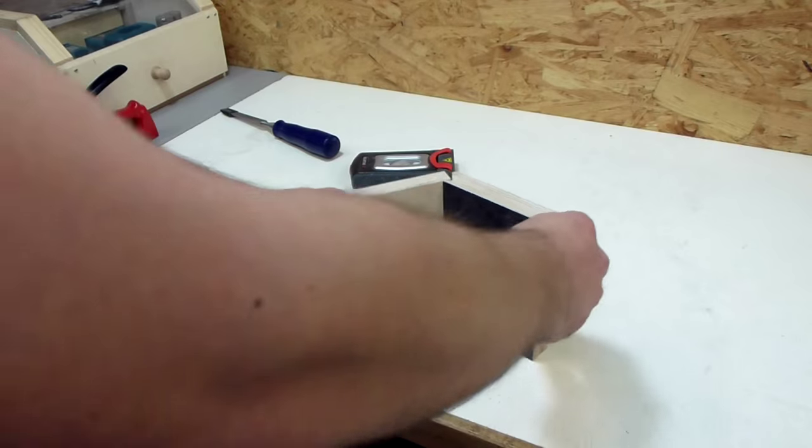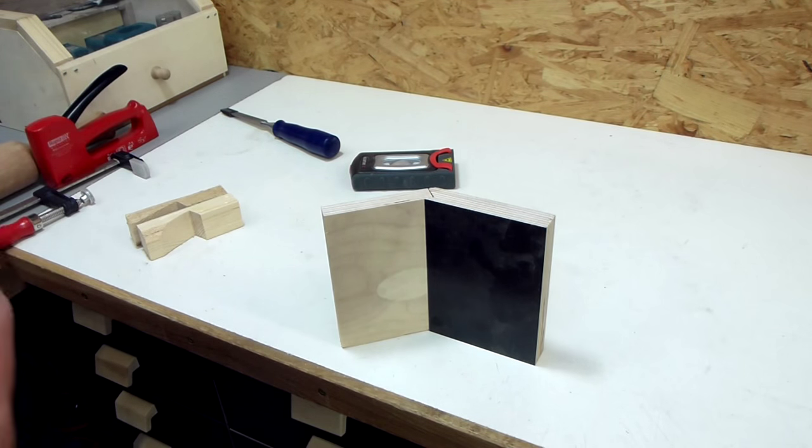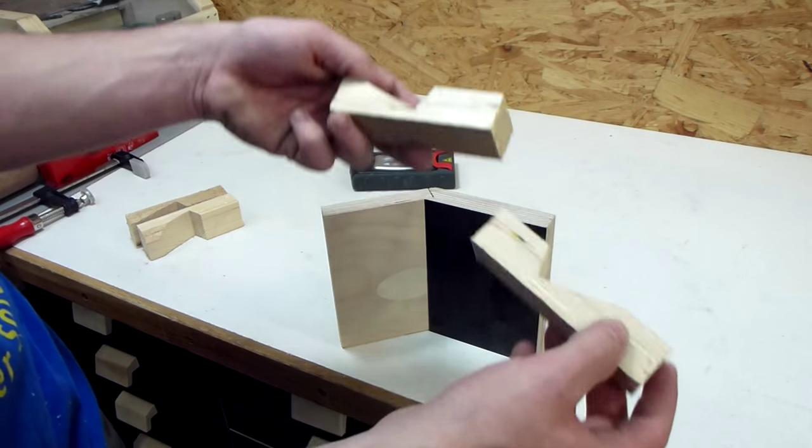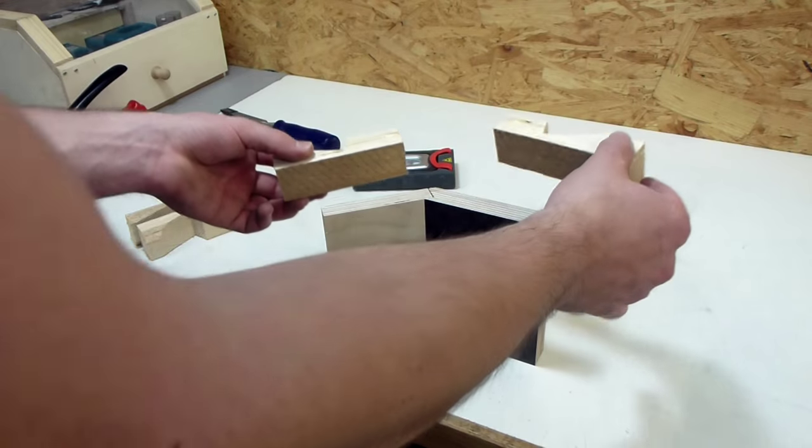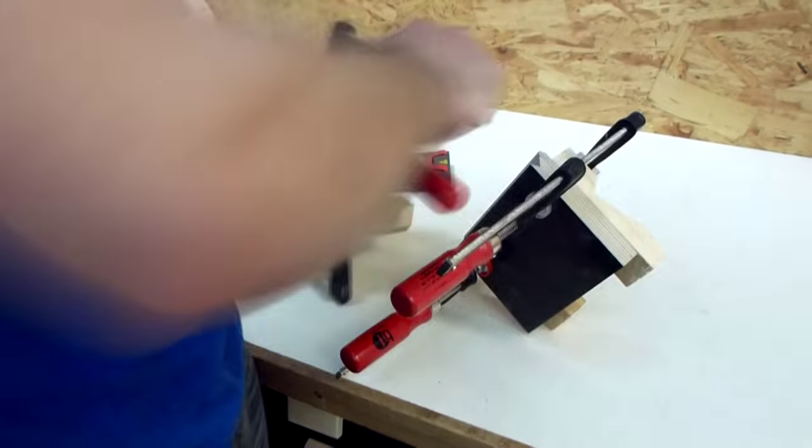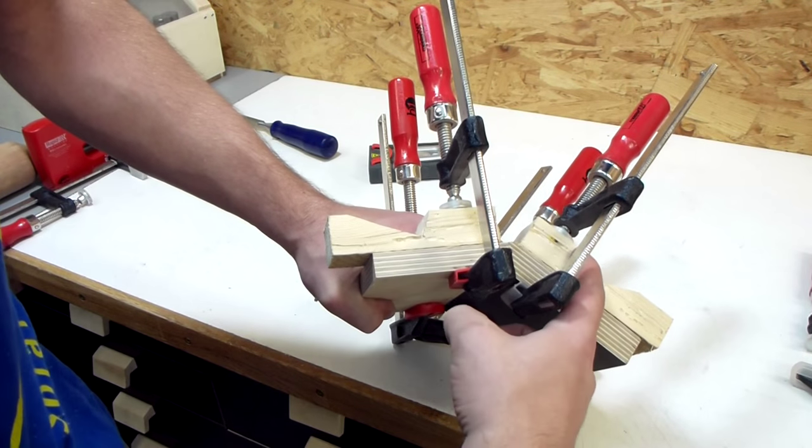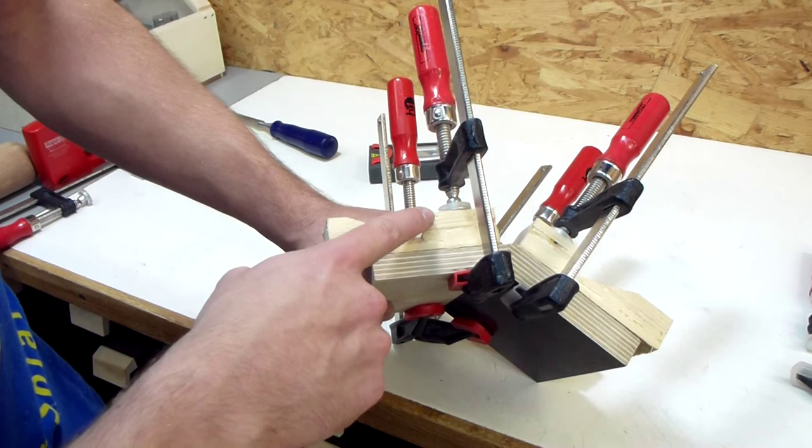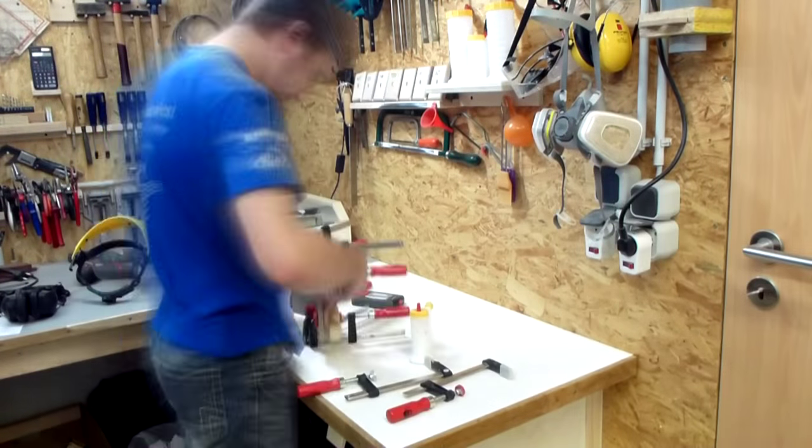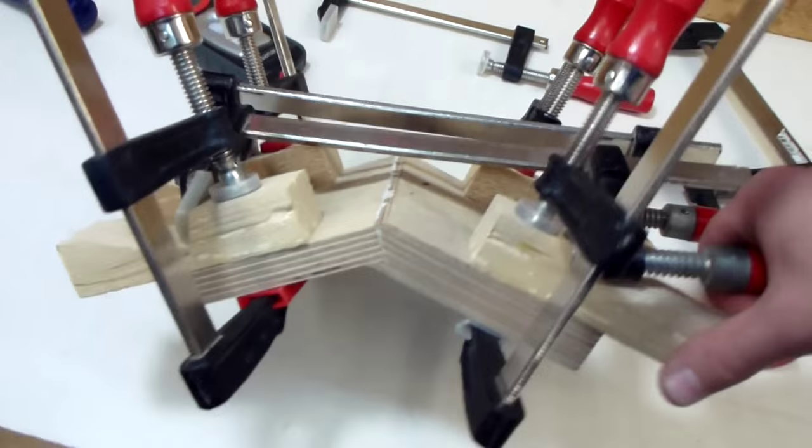But the challenge now is how to glue it up, because you can't just put a clamp from edge to edge. So you need some kind of clamping system and fortunately I have one. Because a while ago I made these clamping blocks for another project. And they just clamped to the pieces like so. And now I can put a clamp from here to here and this should clamp this then reasonably well. Actually it took more time than I thought it would. Now finally it's all glued up.